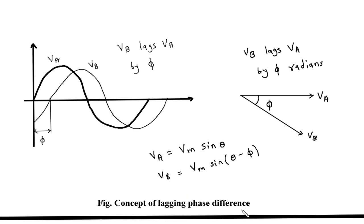Concept of lagging phase difference. Here we can see again there are two waveforms: Va and Vb. The starting point of Va is again from 0. So in the Phasor Diagram, again we are taking Va as a reference because the starting point of Va is from 0, and that is why in the Phasor we are taking Va as a reference.